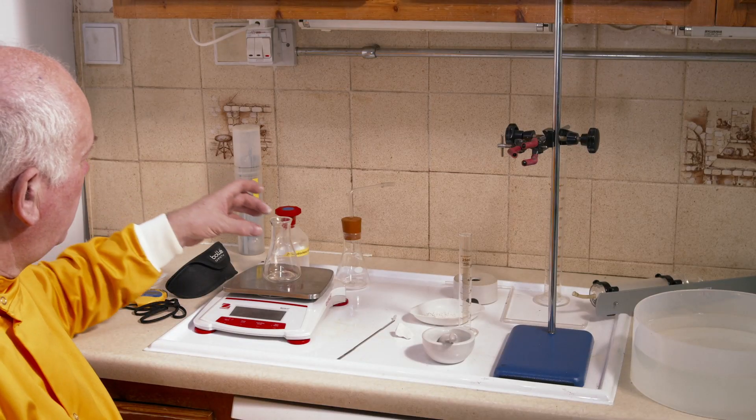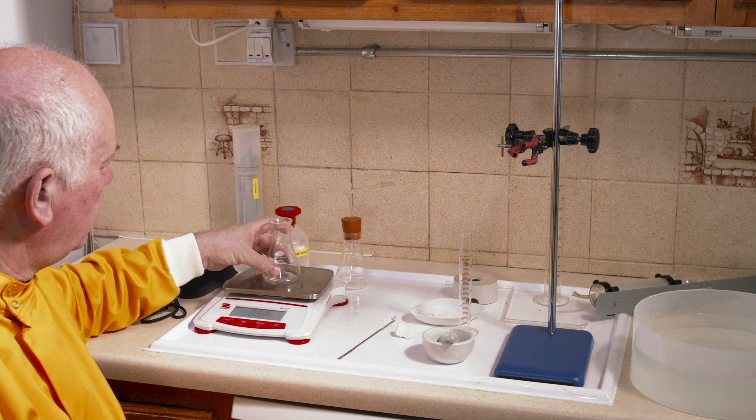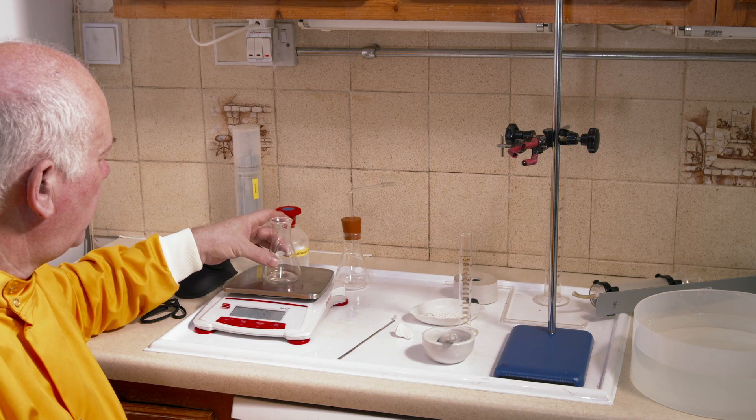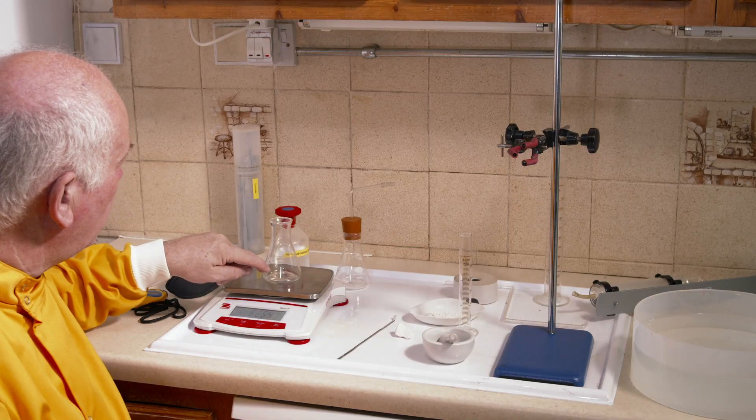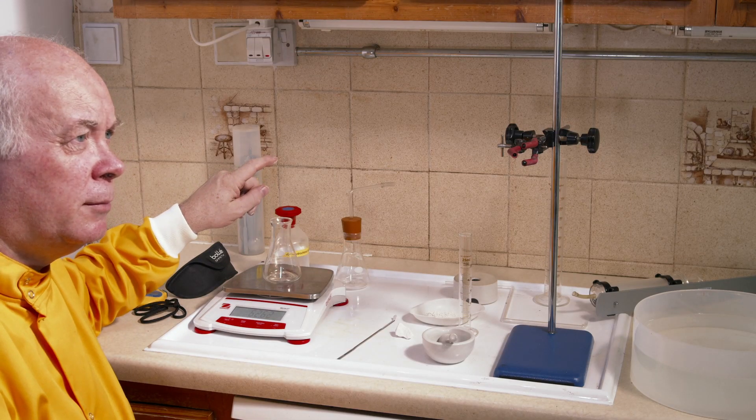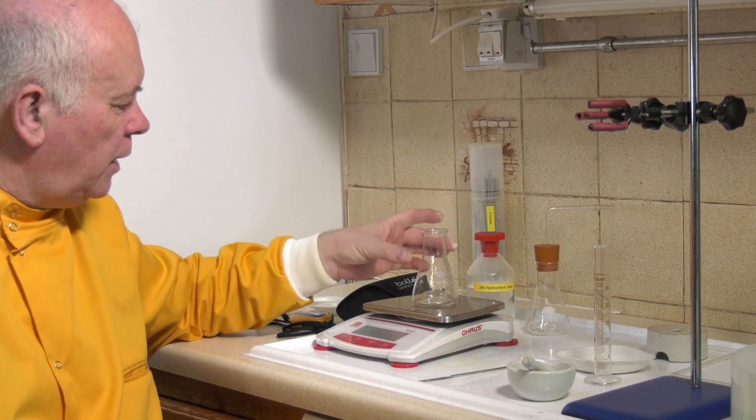So we're going to take our calcium carbonate and acid in this conical flask. That's going to react to give us calcium chloride, some water, and the carbon dioxide gas will bubble off, so we will expect this reaction to get lighter.